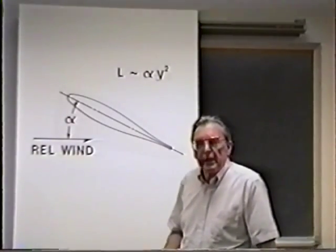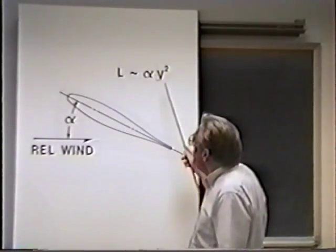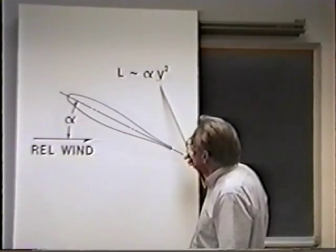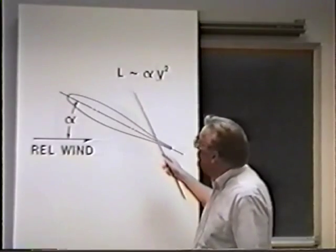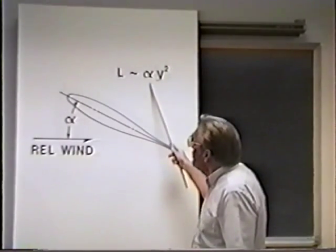bringing the nose of the airplane up and reducing the airspeed. And as that airspeed comes down, then to produce the same amount of lift, the angle of attack must go up.